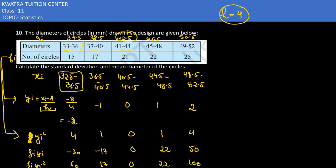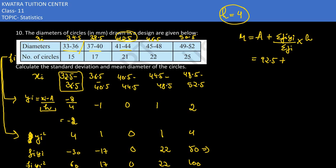Now calculate the mean: Mean = a + (Σfi·yi / Σfi) × h. Here a = 42.5, Σfi·yi = 25 (sum all fi·yi values), Σfi = 100, and h = 4. So (25/100) × 4 = 1, giving mean = 42.5 + 1 = 43.5.